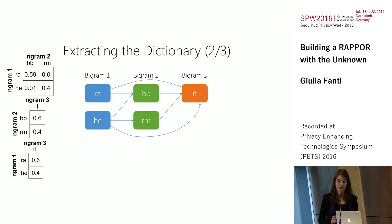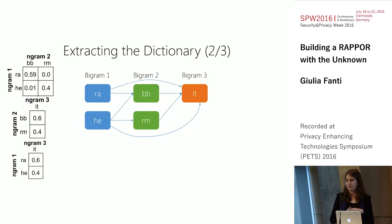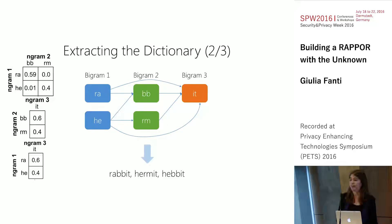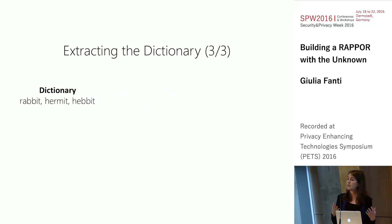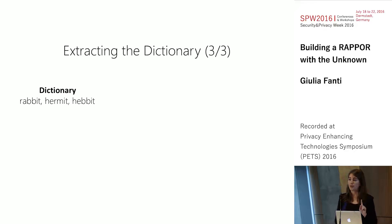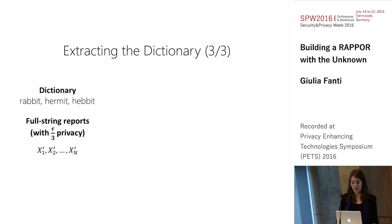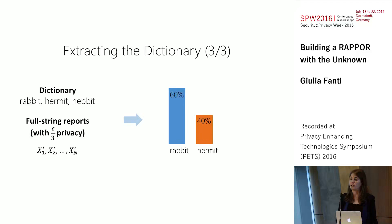Running this clique search on the graph, we get out the strings 'rabbit,' 'hermit,' and 'hebbet' — and of course one of these does not belong. We then consider these strings as our data dictionary, which we previously didn't have. We still haven't used those full string reports each user sent, where they randomized the full string — 'rabbit' or 'hermit.' Using the regular RAPPOR decoding mechanism already proposed in the original paper, we can use this learned dictionary to hopefully recover the desired distribution.